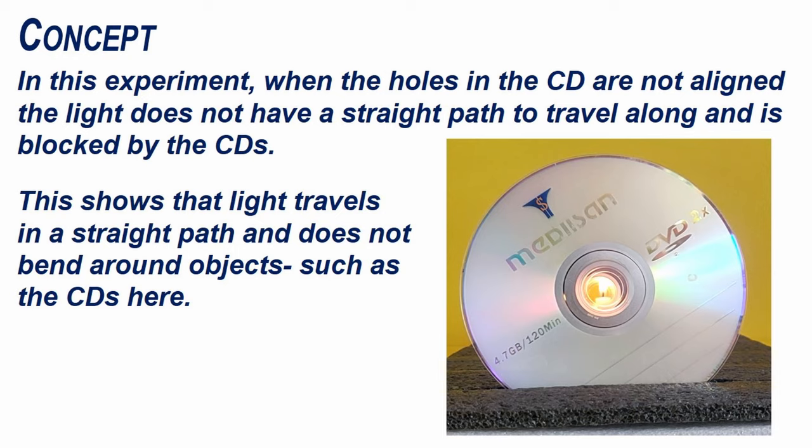In this experiment, when the holes in the CD are not aligned, the light does not have a straight path to travel along and is blocked by the CDs. This shows that light travels in a straight path and does not bend around objects such as the CDs here.